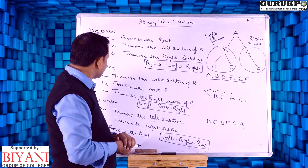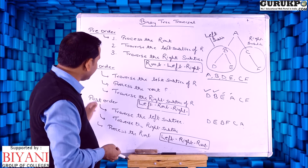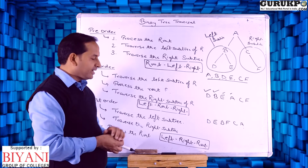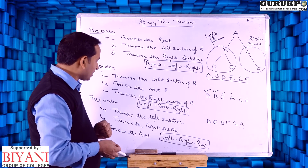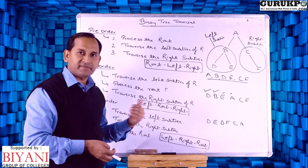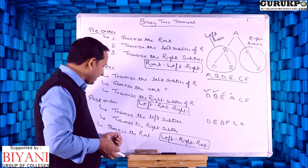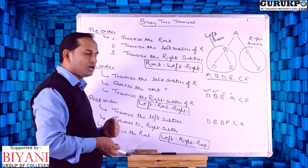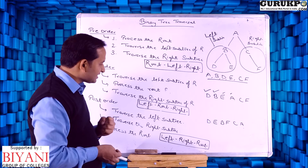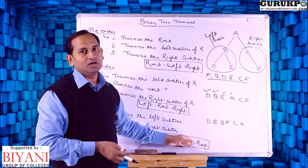Now we are discussing the third traversal technique, called post-order traversal. In case of post-order traversal, first we traverse the left subtree, then we traverse the right subtree, and finally we traverse the root of the tree. In other words, we can say: left, right, root.